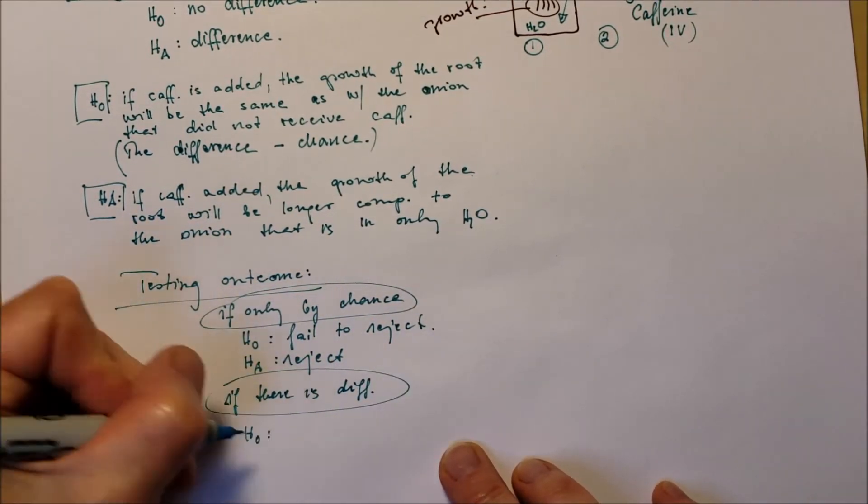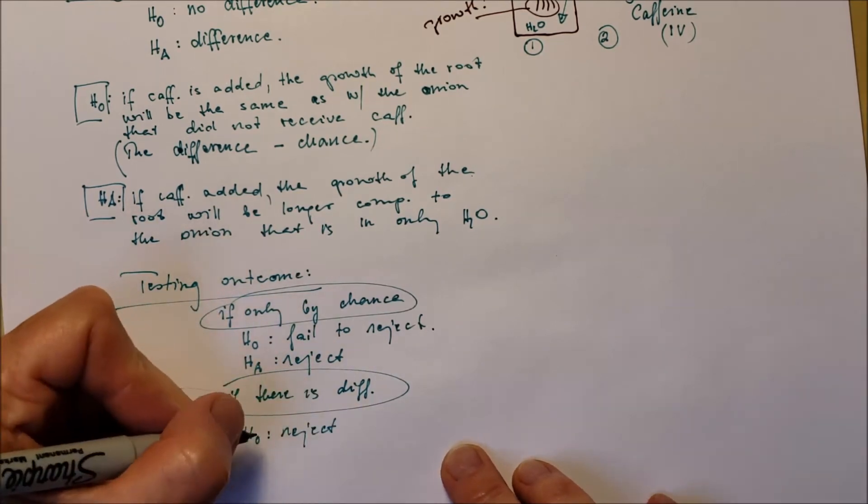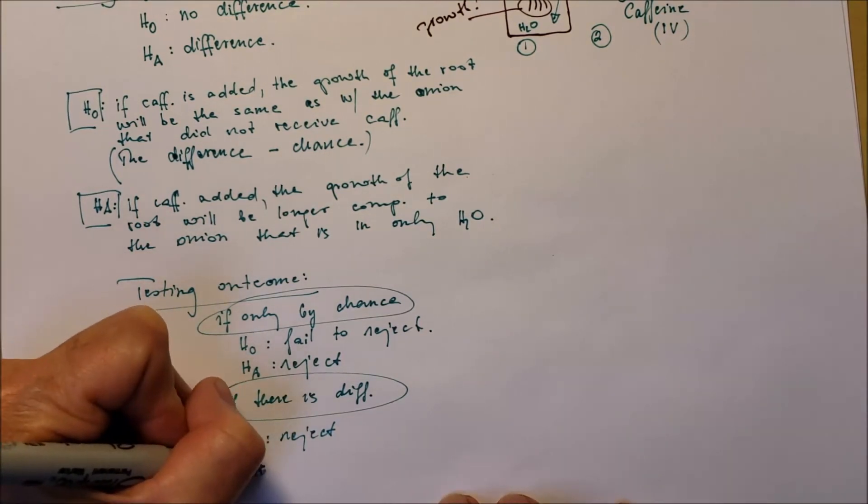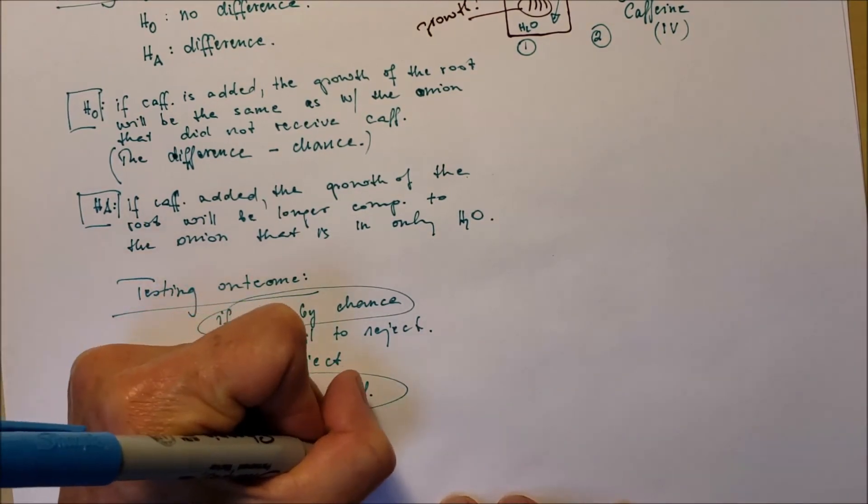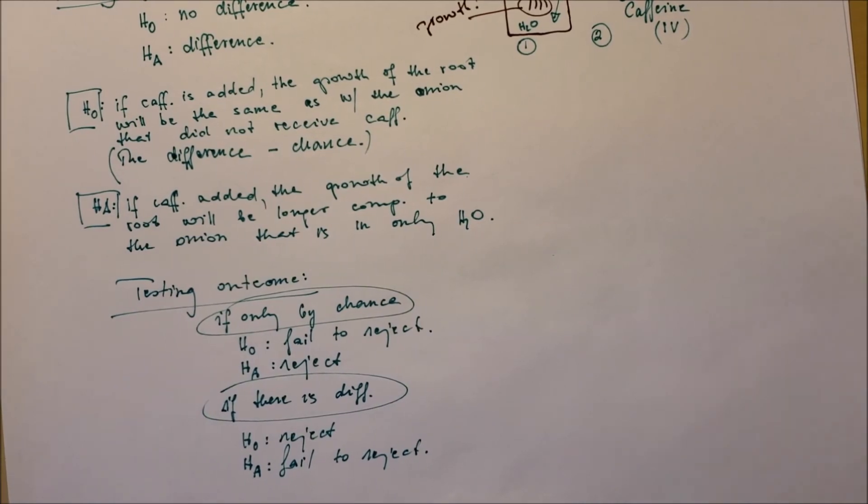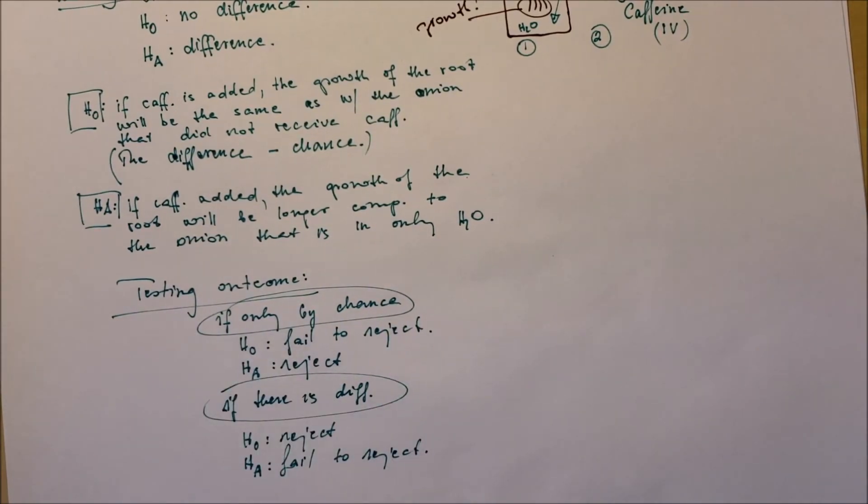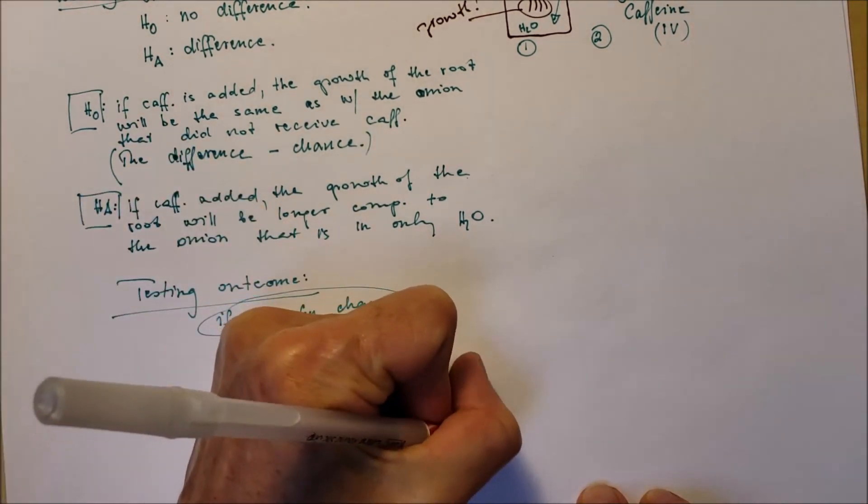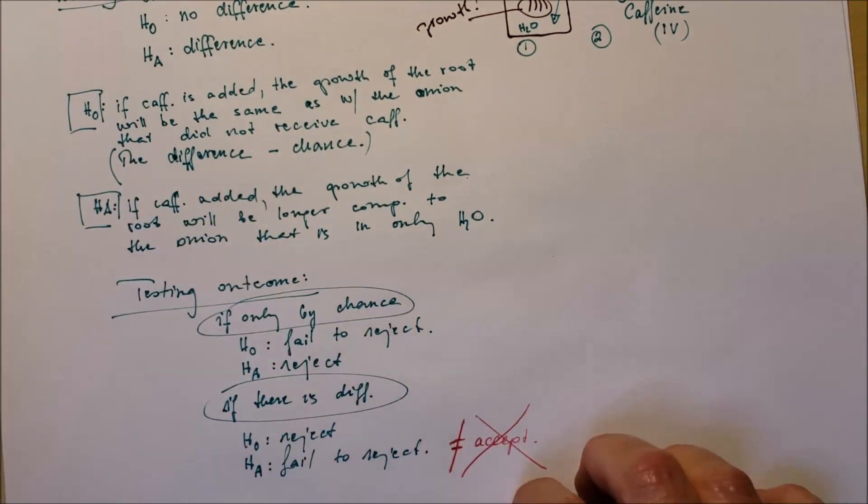If the group's data difference is the result of a non-random cause, in this case we reject the null hypothesis and we fail to reject the alternative hypothesis. Please pay attention, fail to reject is not equal to accept. We never accept anything, just fail to reject. Thank you.